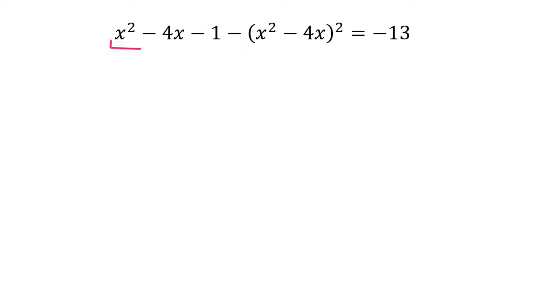What we should realize here is that this part is the same. So we just say let x² - 4x equal to k, and we replace that with k - 1 - (k²). Now we can just say k - 1 - k² = -13, and now it's easy.